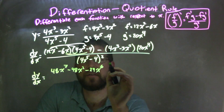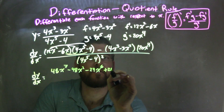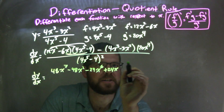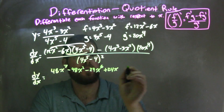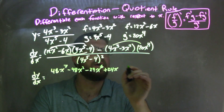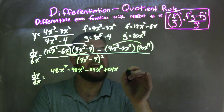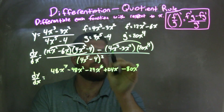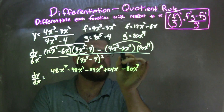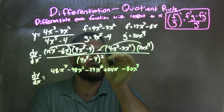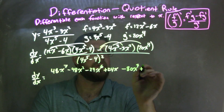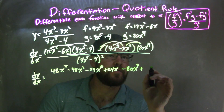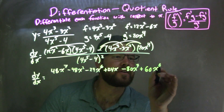And negative 6x times negative 4 is positive 24x. Now when we subtract here, we have to remember that subtraction gets distributed to both parts. So 4 times 20 is 80, giving us 80x to the seventh with a subtraction. That subtraction combined with the subtraction in front makes an addition, so we add 3x squared times 20x to the fourth, which is 60x to the sixth.